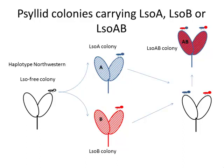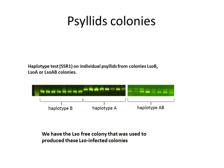It's a big resource for the lab — a lot of working hours, going in on weekends to water the plants and things like that. All these colonies are from the same genetic background of insect. Our AB colony is a mix of our A and B separate colonies. We verify that these colonies are really A and B by PCR on insect DNA extracted from the separated colonies and tested with the marker developed by Dr. Goodman's lab, SSR-1. Our LSO-B colony has only haplotype B, the LSO-A colony has only haplotype A, and our colony AB has both A and B in the insect.